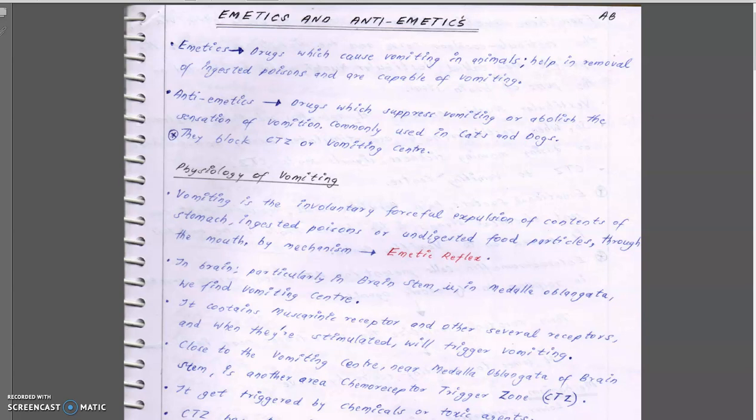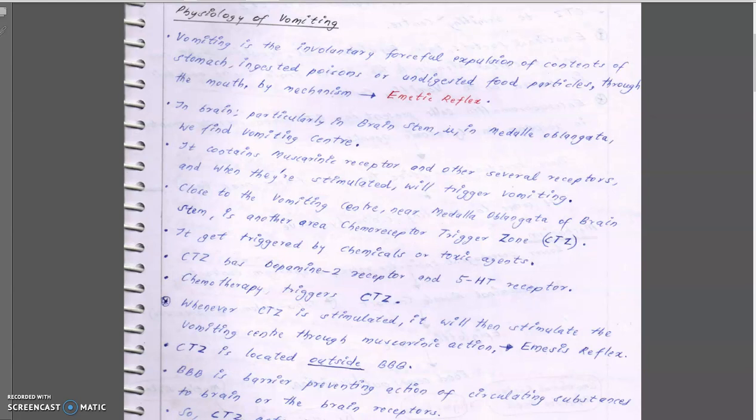In case of dogs and cats, we often use anti-emetic drugs to decrease the sensation of vomiting and suppress vomiting. They are commonly used in cats and dogs. They block the vomiting center or vomition center located in the brain, and also block the chemoreceptor trigger zone.